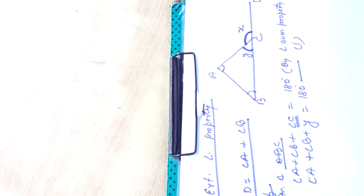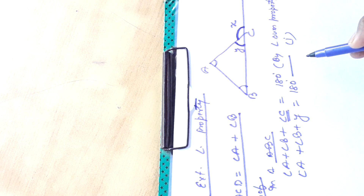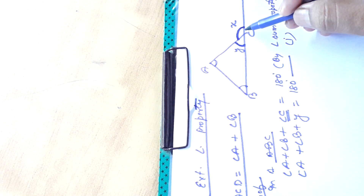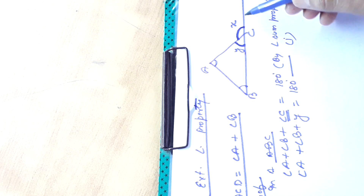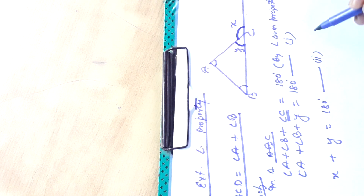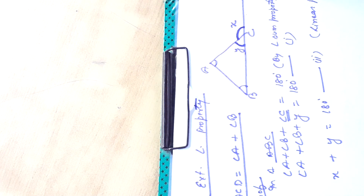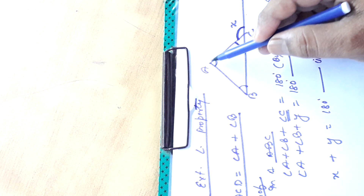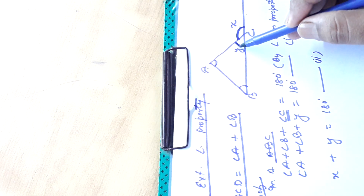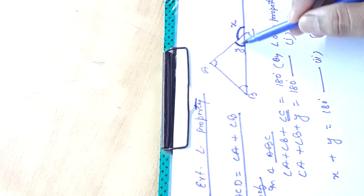Now we will start from here again. The sum of these two angles x and y will be 180 degrees because they are a linear pair. So x plus y is equal to 180 degrees. Linear pair means when there is a straight line and a ray, these two angles form a linear pair and their sum is always 180 degrees.